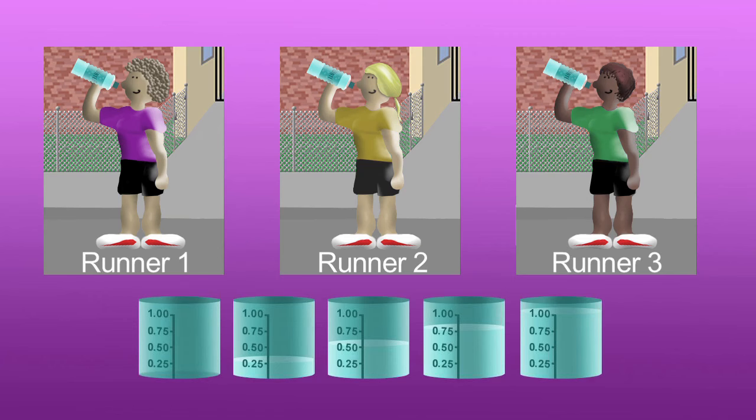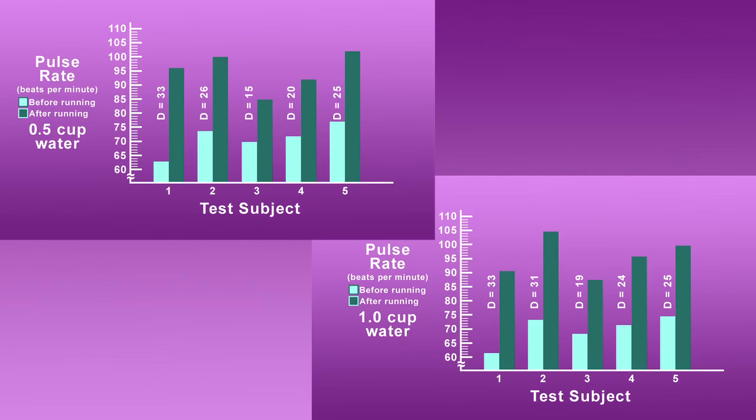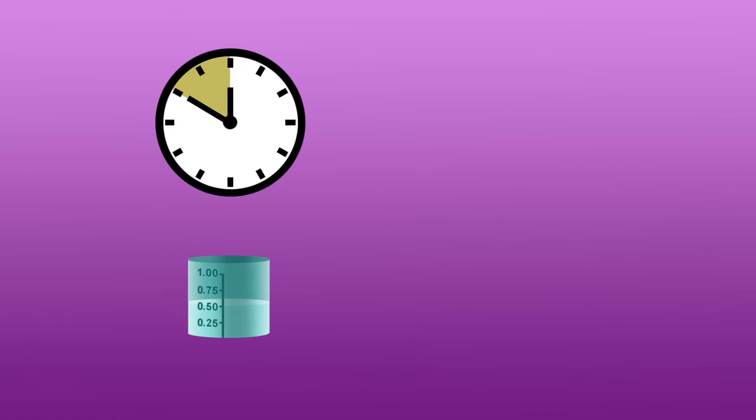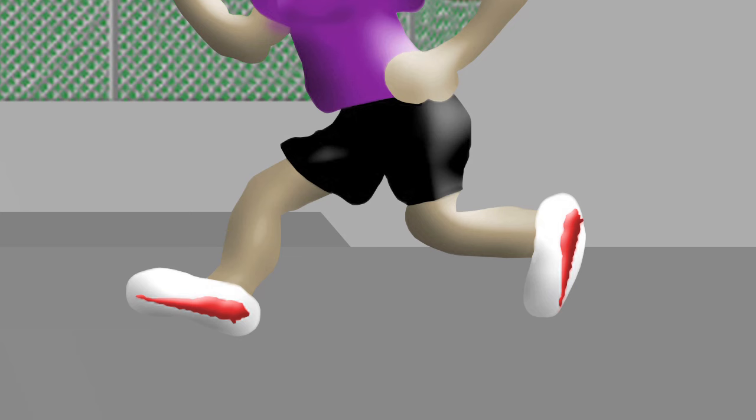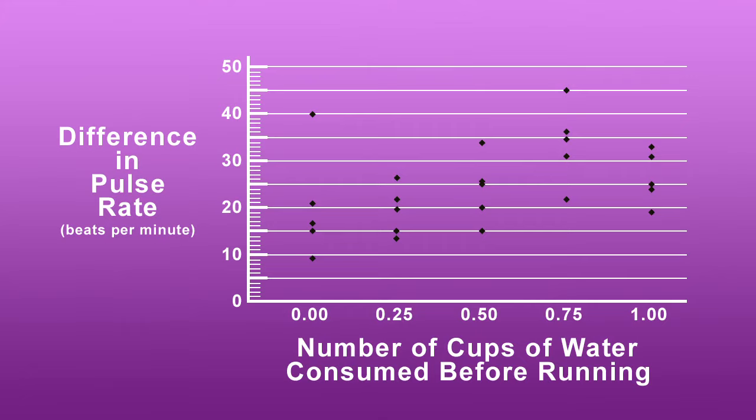So let's assume that you collected all of that information, and you've put it up on a plot. You've had several different people drink, for instance, maybe half a cup of water ten minutes before running, or one cup of water ten minutes before running, and then you had them run a certain distance, and then you took their pulse rate at the end.